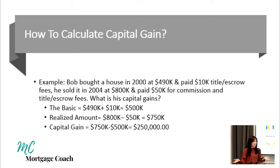So here's the example. Bob is a single man who bought his home in 2000 for $490,000, and he had to pay $10,000 for title, escrow fees, and closing costs — the expenses he had to pay for buying the home. So his basis is his $490,000 purchase price plus the $10,000 in expenses, which equals $500,000. That $500,000 is called the basis.